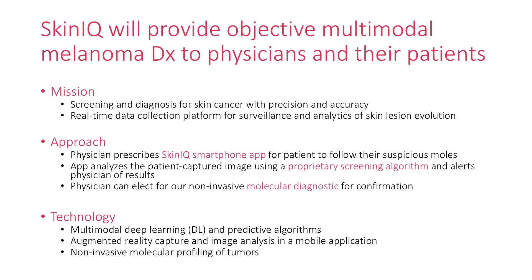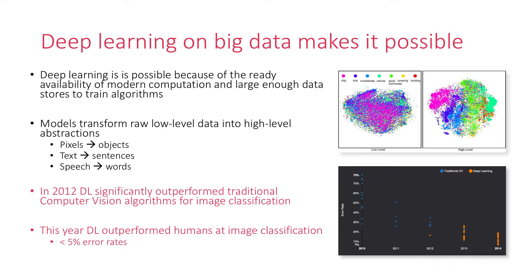This is sort of the problem: there is no robust and objective way to diagnose melanoma. There is this ABCDE method where you subjectively quantify asymmetry, border, color, diameter of skin moles, etc. There's another method that was developed — the ugly duckling method — where you compare one mole to other moles on your skin to subjectively make a diagnosis.